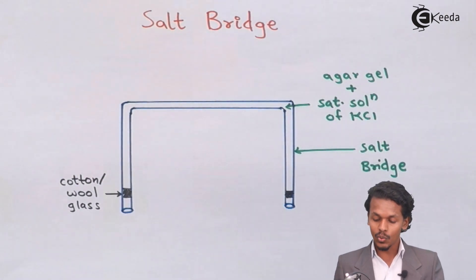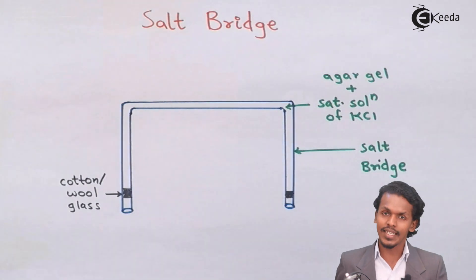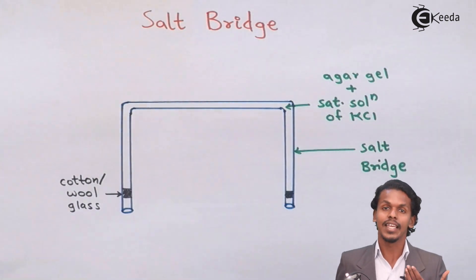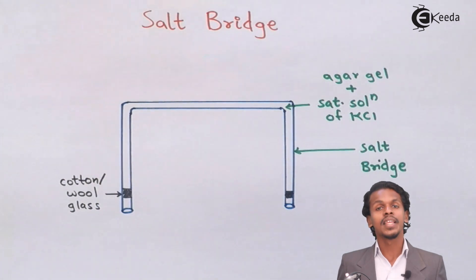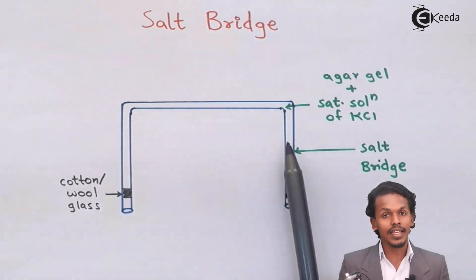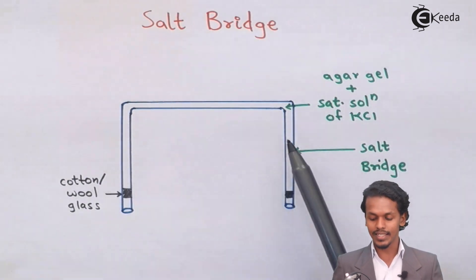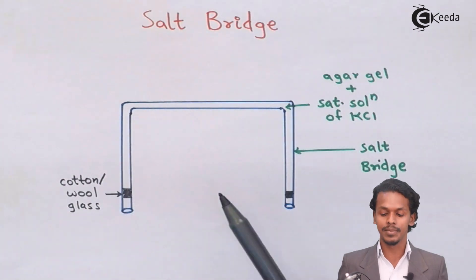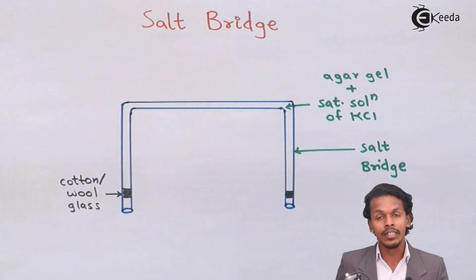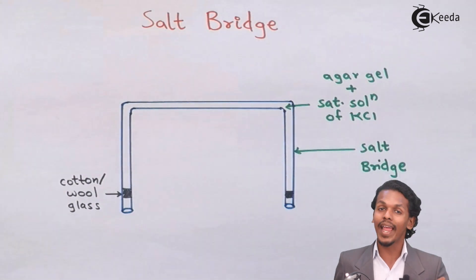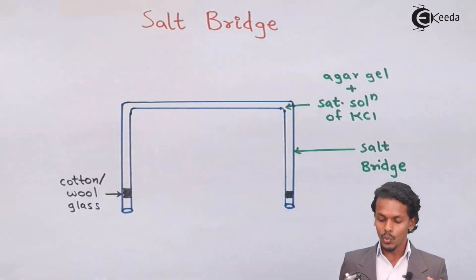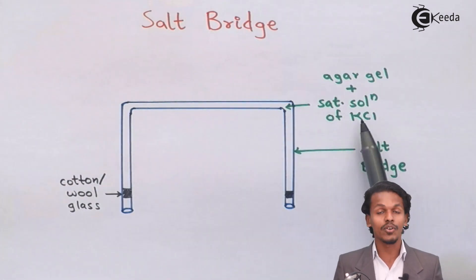To insert the saturated KCl solution, a procedure must be followed. The glass tube is inverted and hot water is added through it to release any impurities. Then a hot saturated KCl solution is added in the inverted form so that the KCl solution fills the hollow tube. It is then allowed to cool, causing it to set in the glass tube. Even when placed in the half cells of a Daniel cell or any other cell, it will not lose the KCl salt present in the tube.